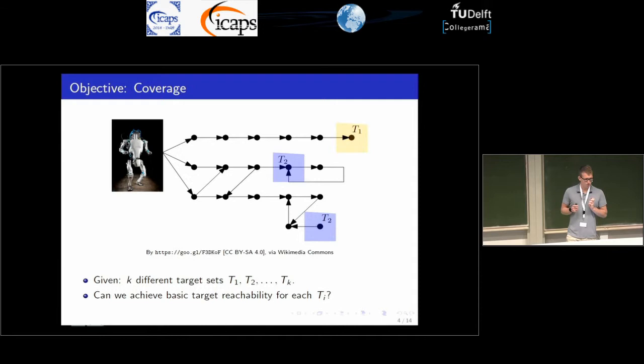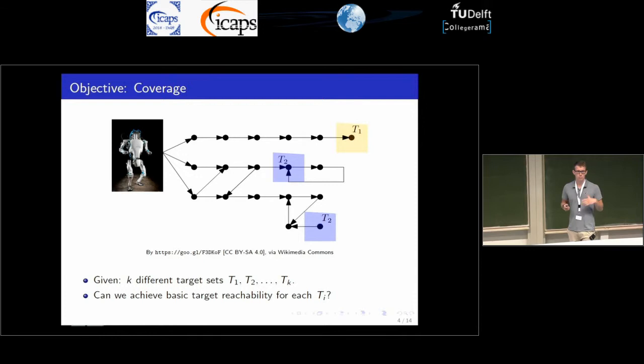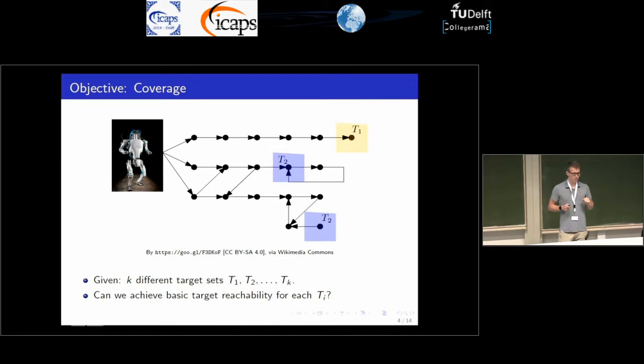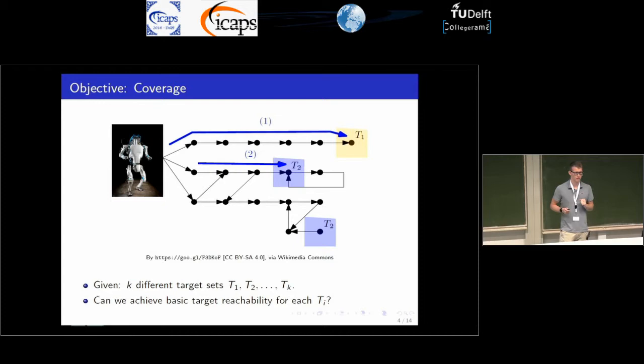The next objective is coverage, where you have K different target sets and the question is whether you can satisfy basic target reachability for each of them. Imagine the robot is in a spaceship and has certain tasks — for each emergency he needs to know if he can reach the countermeasure. In this case it's possible: if the first emergency occurs he goes to T1, if the second occurs he goes to T2.